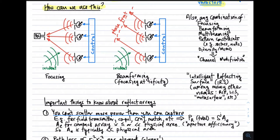So how can we use this idea? As I alluded to before, we could do focusing. By controlling those phase shifts in a certain way — which requires knowledge of the incoming wave — you could set these phase shifts such that the phase of the scattered fields are all equal at a desired location in space. That's focusing. Alternatively, you could do beamforming, which is simply making the phases of the scattered fields all be the same along a phase front. Beamforming is focusing at infinity — it's a special case of focusing where the focus has been moved off to infinity.